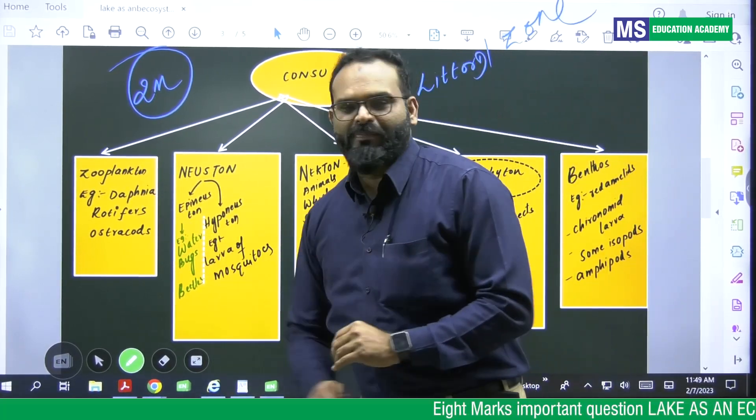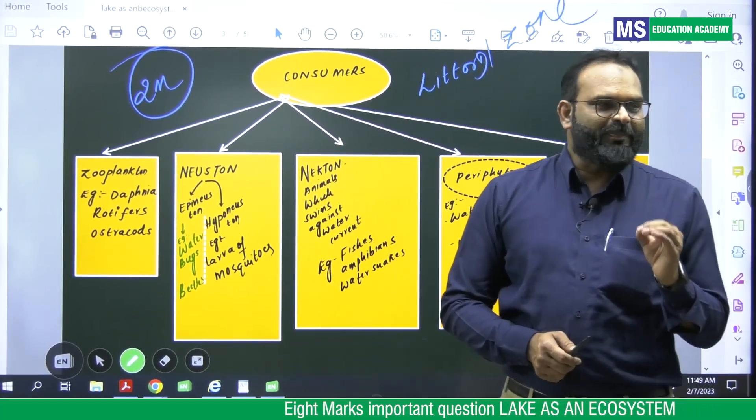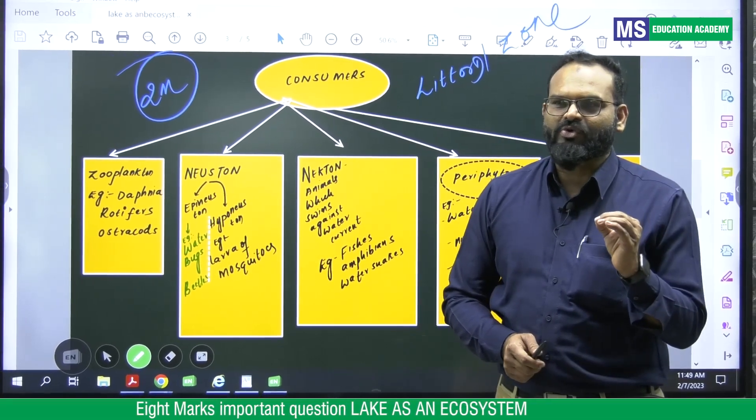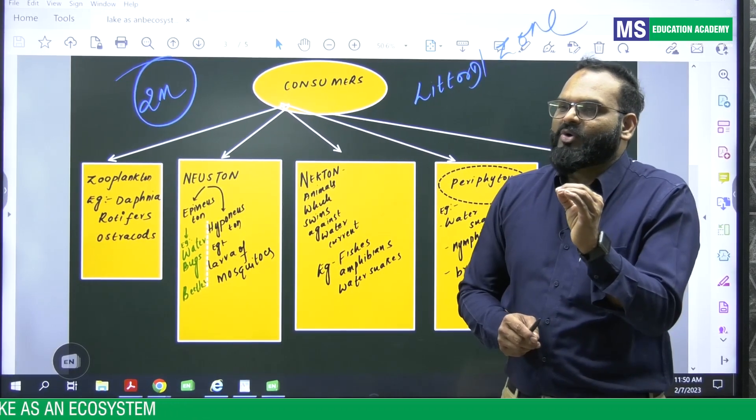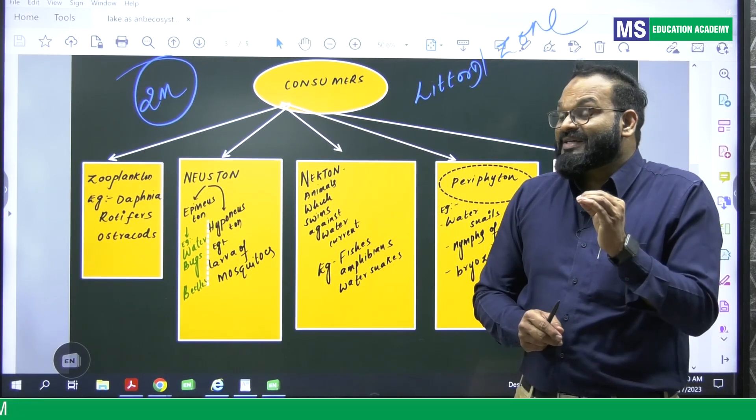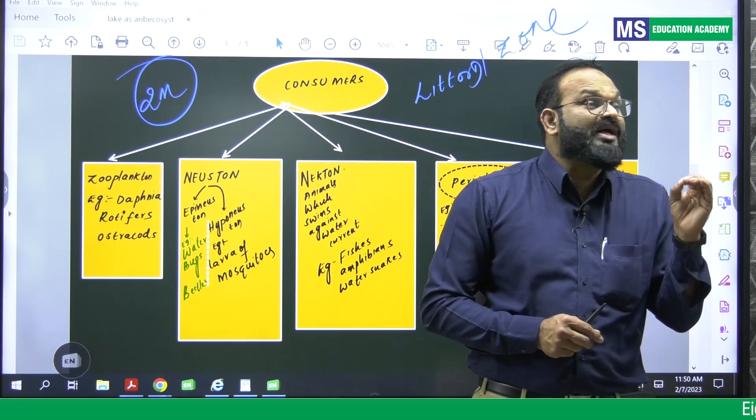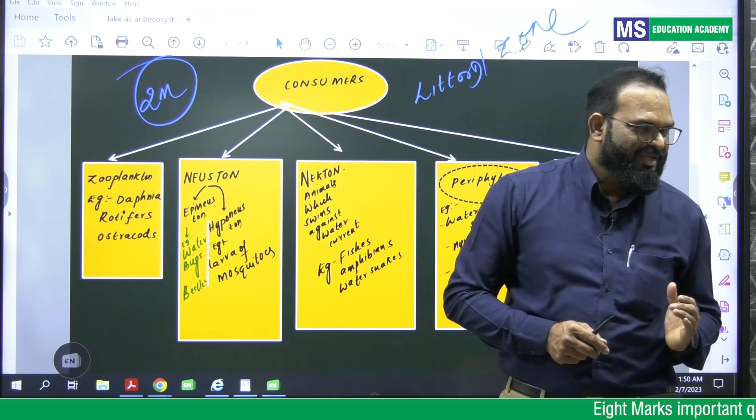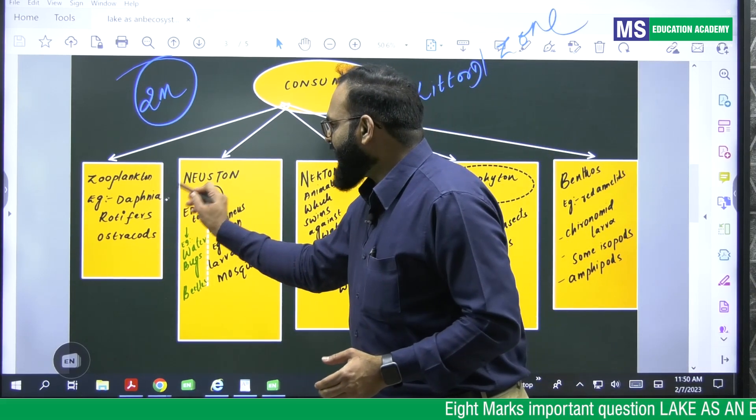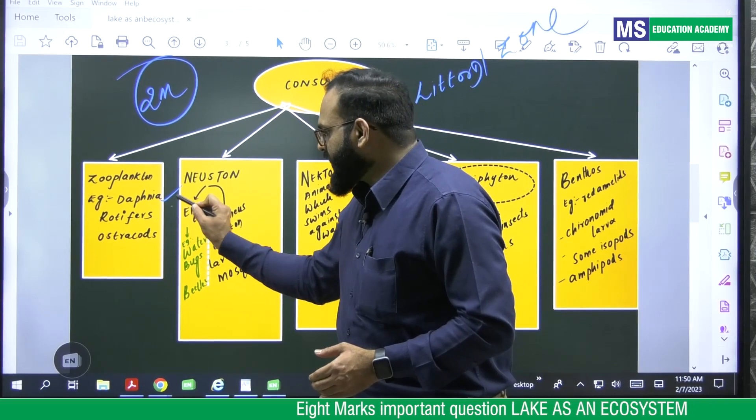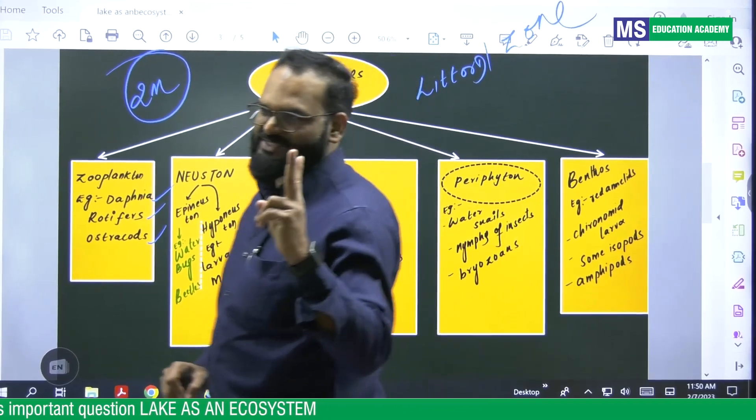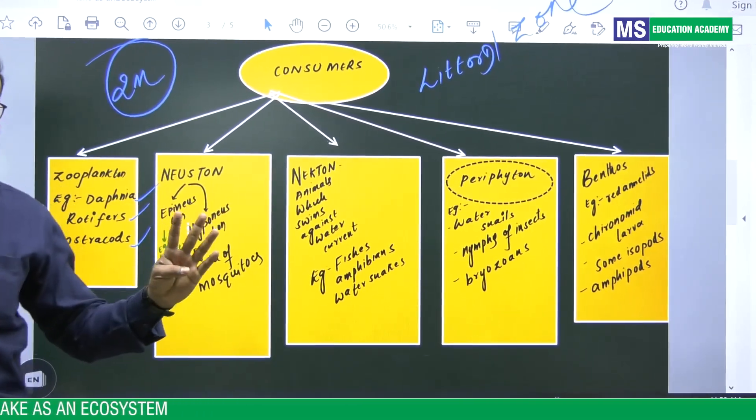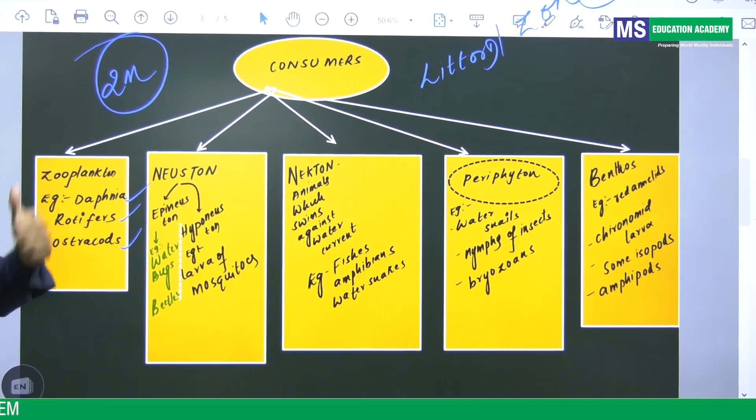First, what are zooplankton? Zooplanktons are microscopic organisms which have weak locomotory structures and their locomotion depends upon mercy of water currents. Example, Daphnia, Rotifers, Ostracods. At least two examples you have to write, students. Zooplanktons, Daphnia, Rotifers.